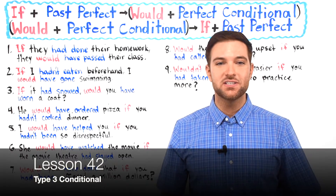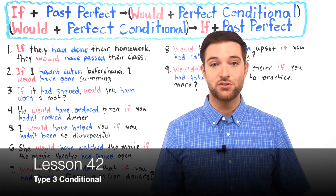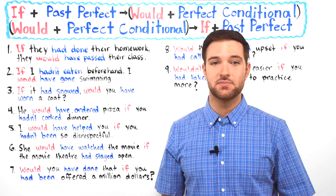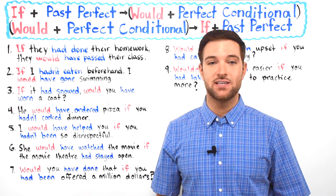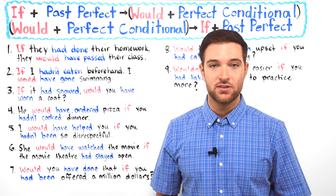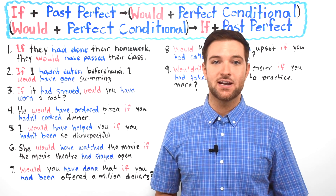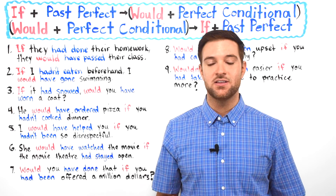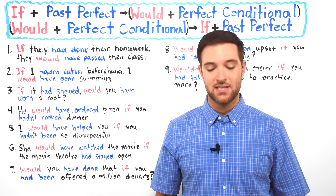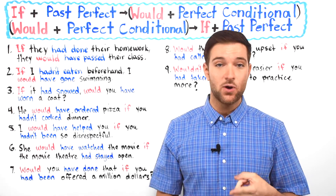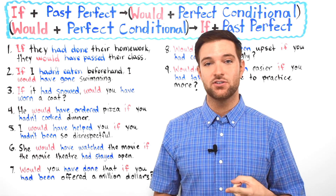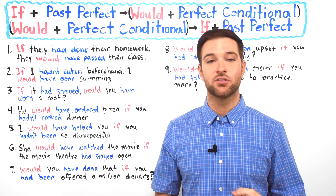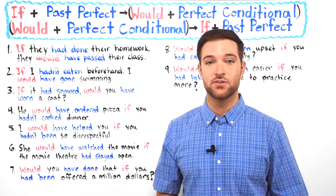Hello everyone, welcome to lesson number 42. In this lesson we're going to be talking more about the types of conditionals in the English language. If you don't already know, there's actually five types of conditional sentences all in all, and we've already learned about the type 0 conditional, the type 1 conditional, and the type 2 conditional in lesson number 36 and in lesson number 37.